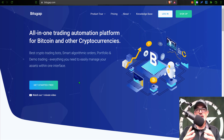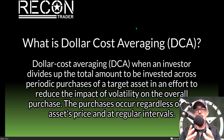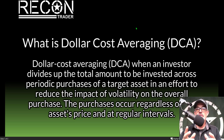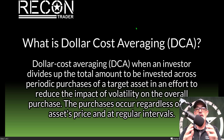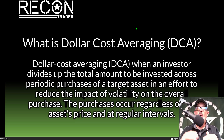Let's get this DCA grid bot configured and deployed. For those not familiar with how dollar cost averaging works: it is basically when an investor divides up the total amount to be invested across purchases of a target asset in an effort to reduce the impact of volatility on an overall purchase. The purchases occur regardless of asset price and at regular intervals.